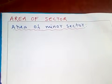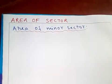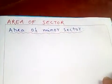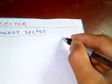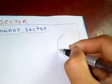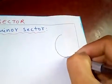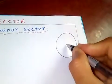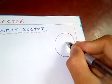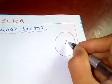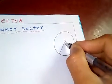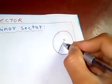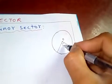Thanks for watching my video. Today I'm going to discuss the area of a sector. First, let's understand what a sector in a circle is. Let's draw a circle with center O, and from the center draw two radii, making an angle theta between them.